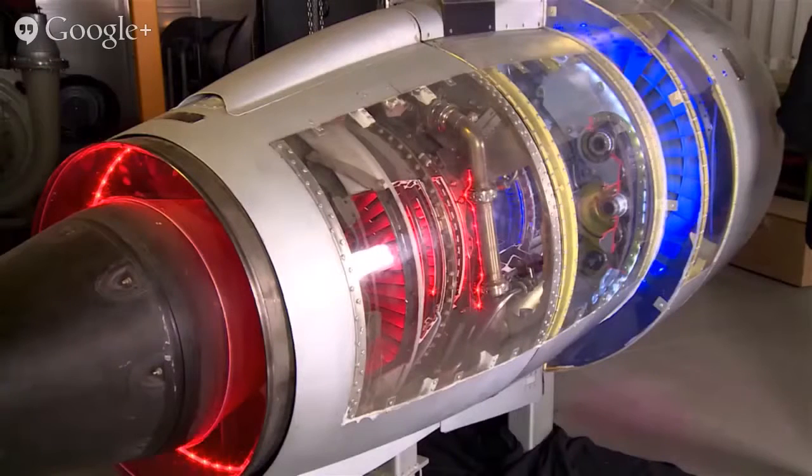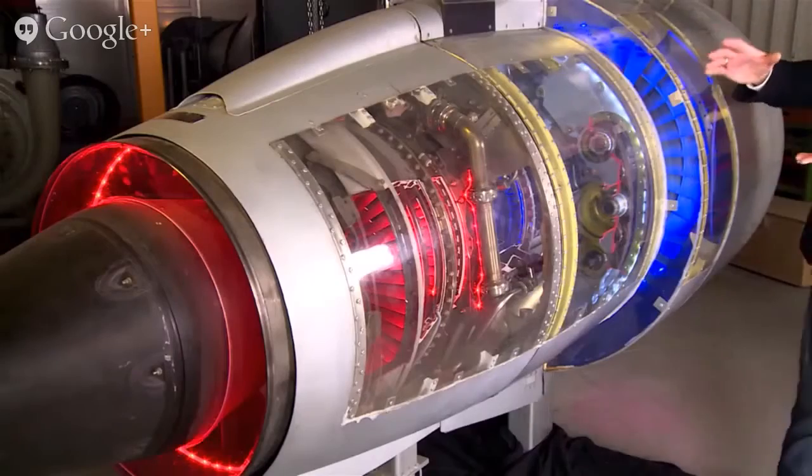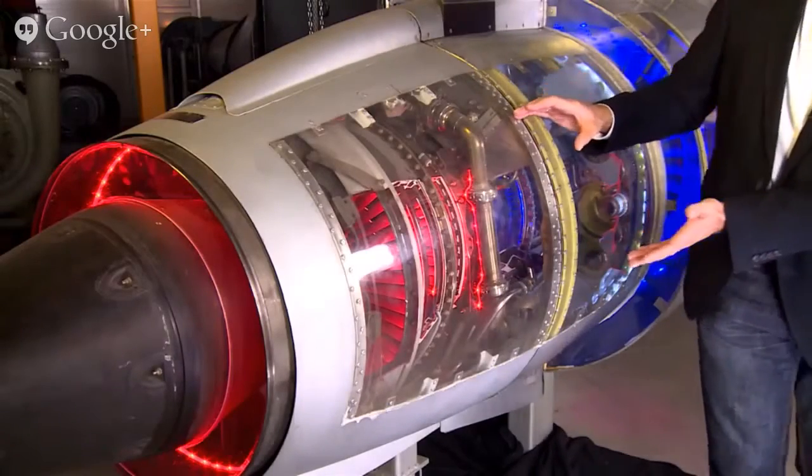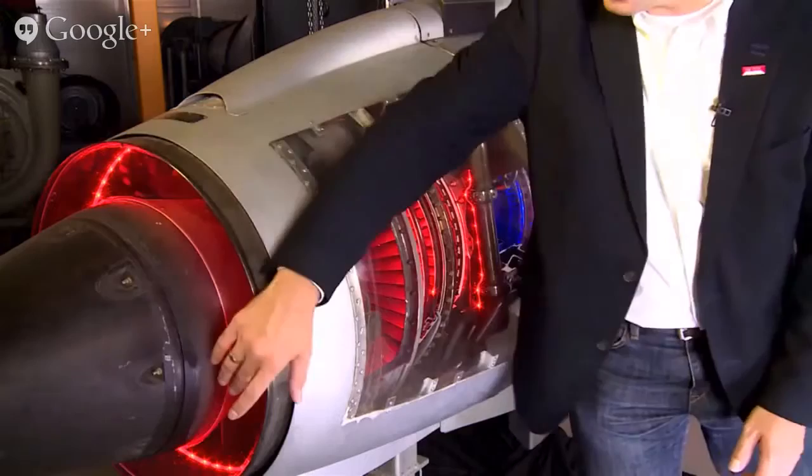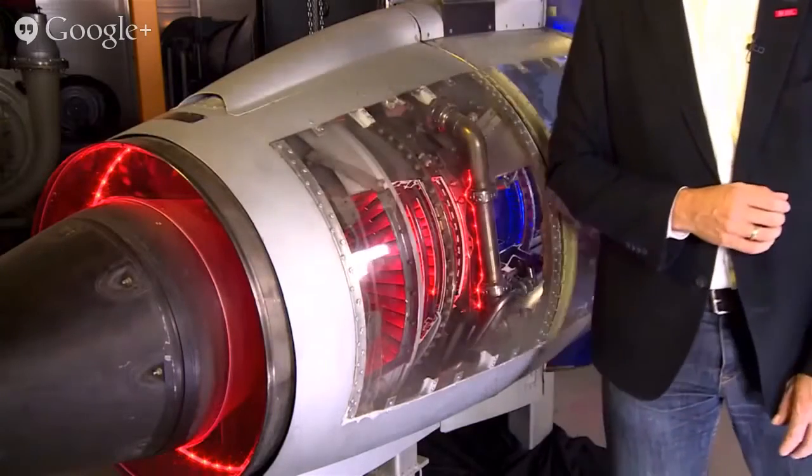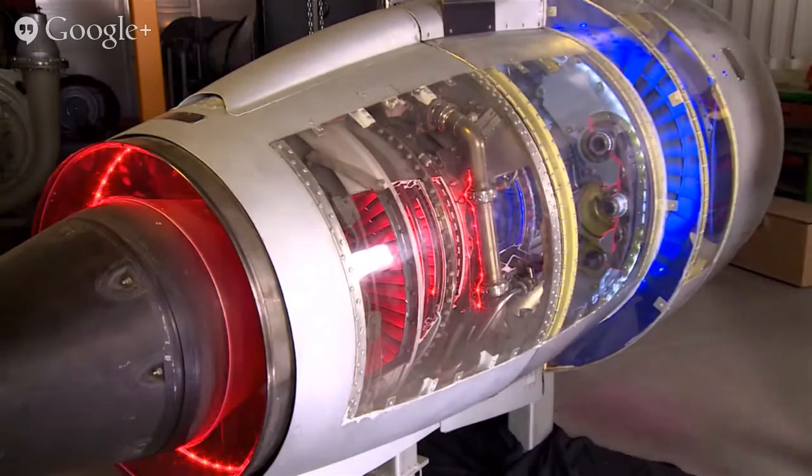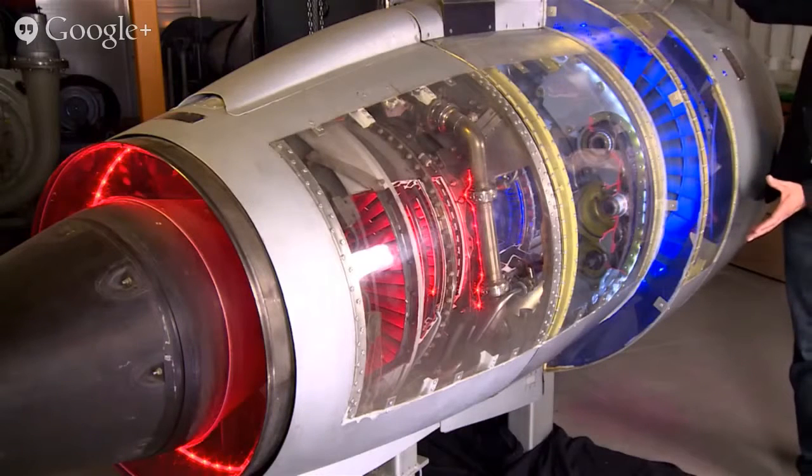The first one, called the primary mass flow, is routed through the compressor into the combustion chamber and is expanded through the turbine and leaving the engine here in this exit area, which is called the primary nozzle.